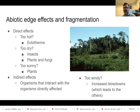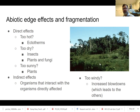We can divide up the effects into direct and indirect effects. Increased temperature may affect things like ectotherms — insects, lizards, snakes — and plants as well. It could be too dry, which would strongly affect insects and then plants and fungi as well. The amount of sun is going to affect plants, and some plants I have listed here as 'too sunny for plants.'